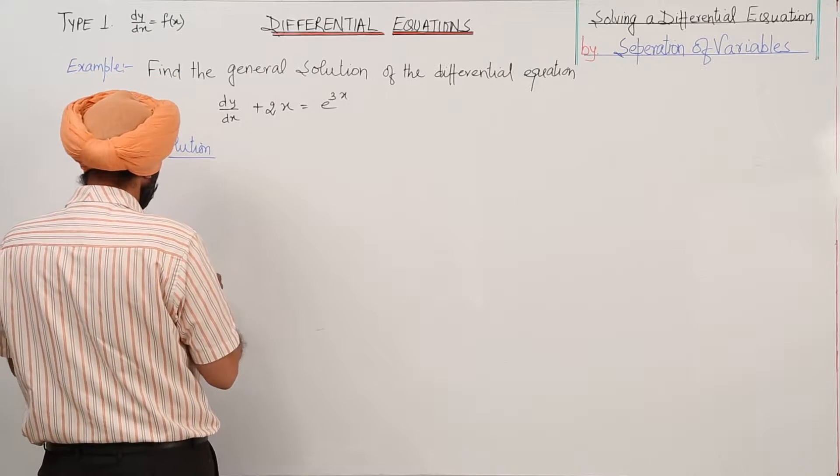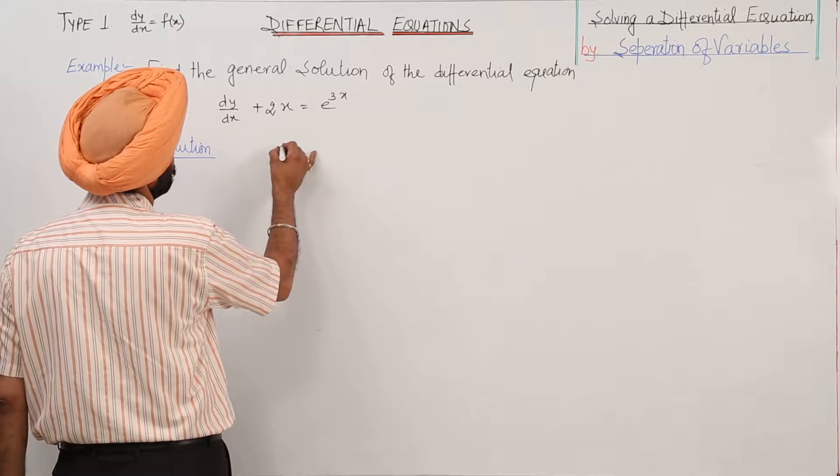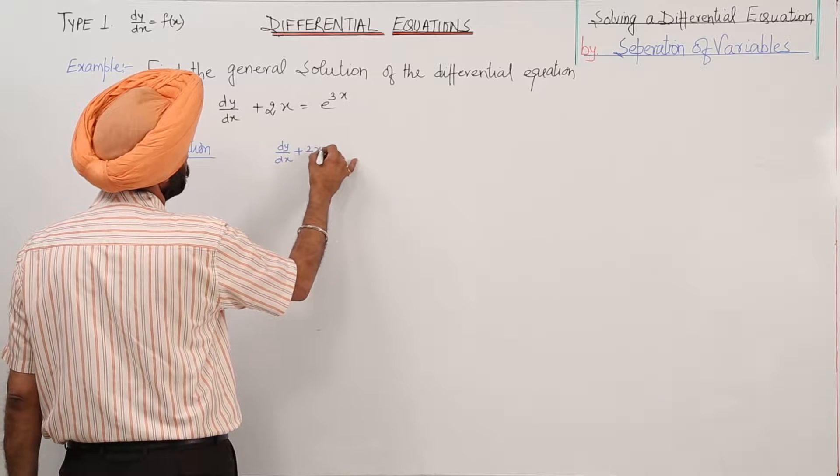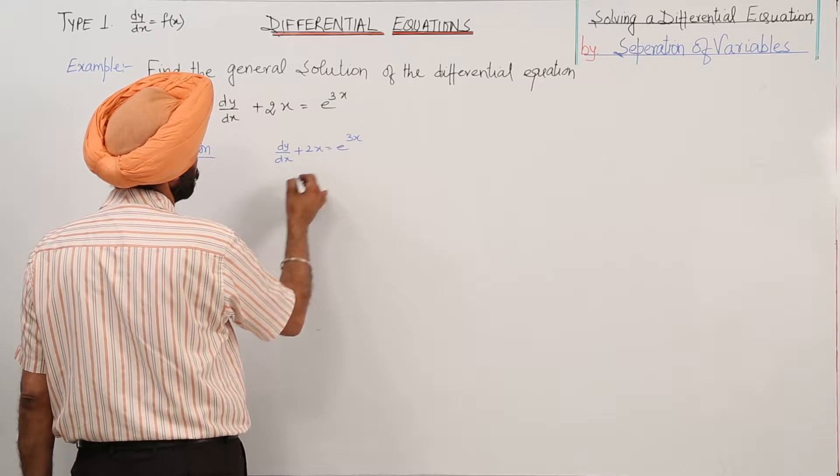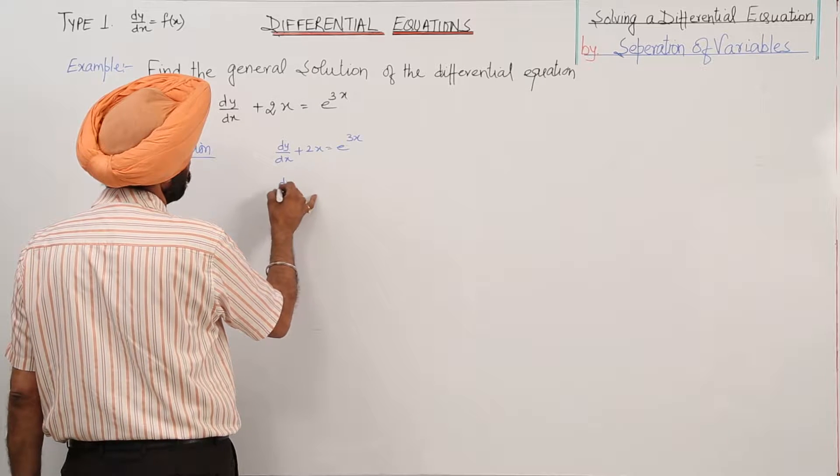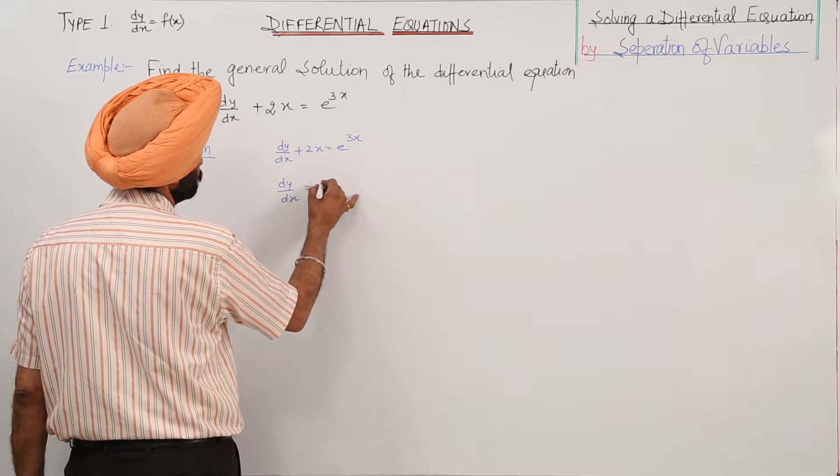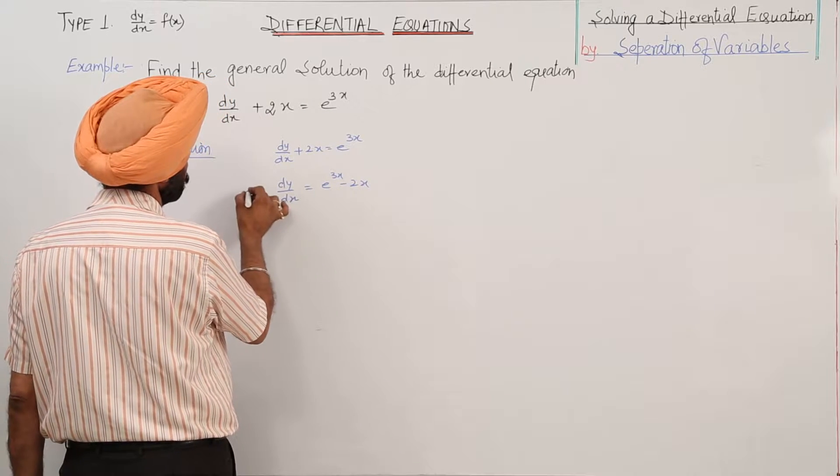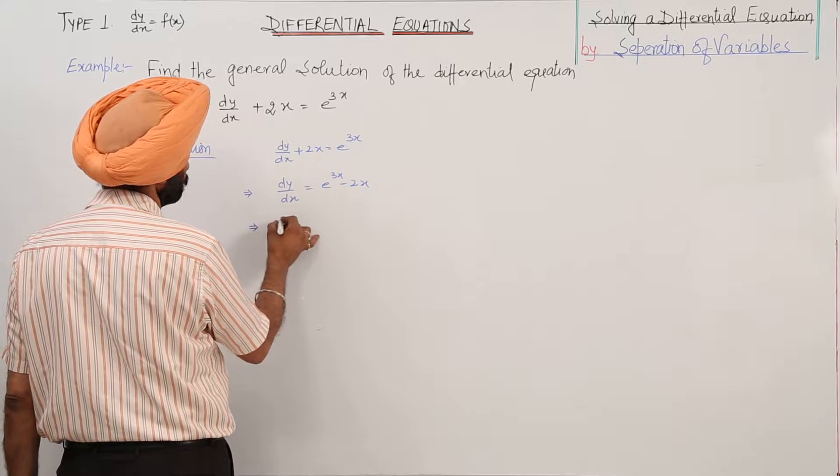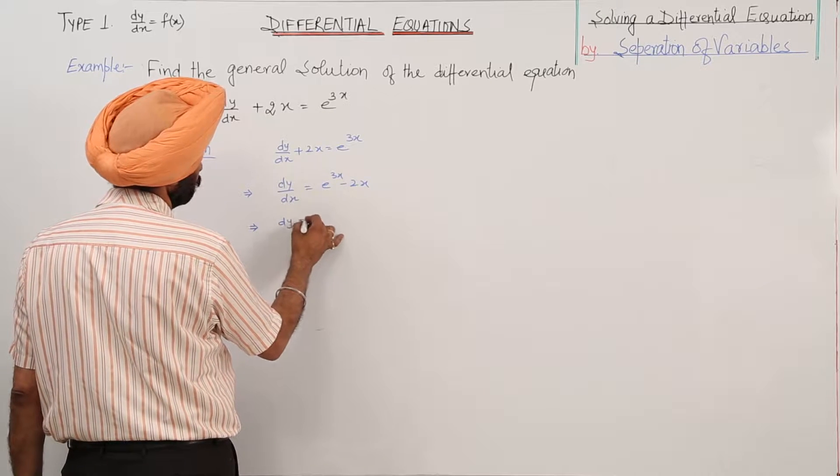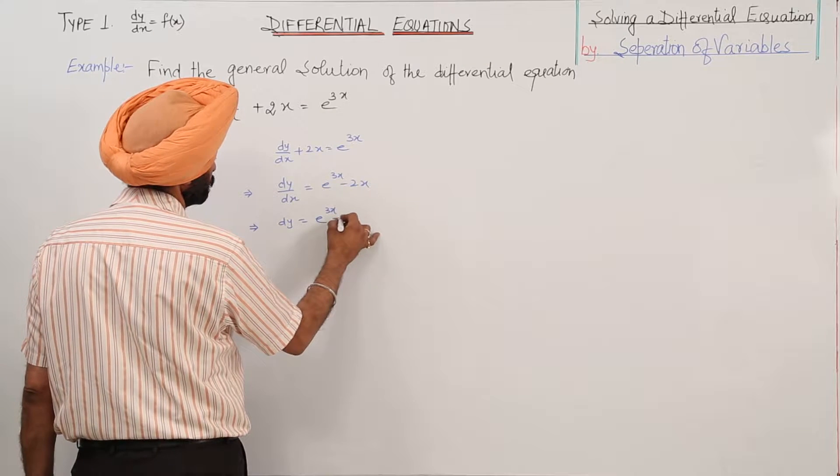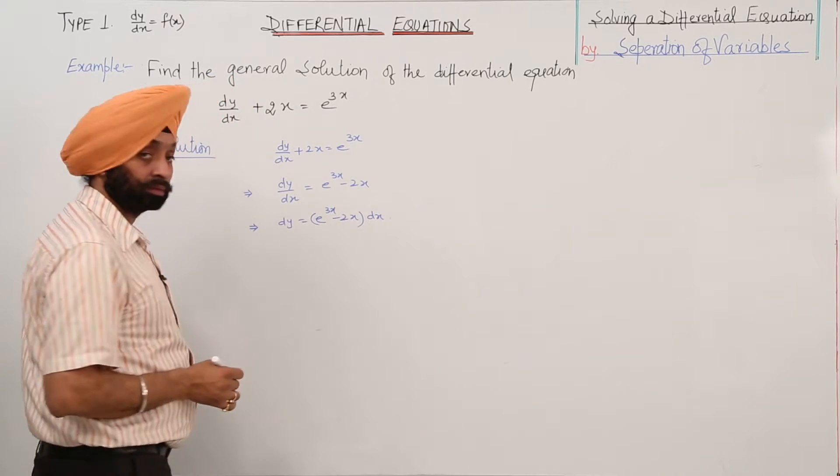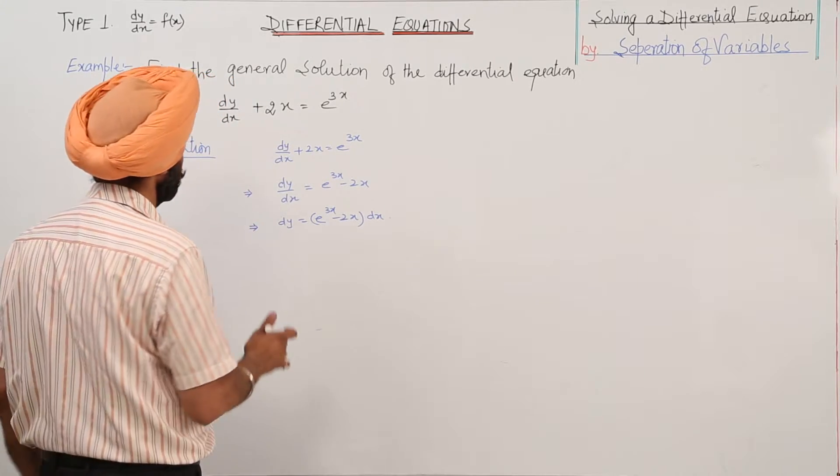Now, we can write it as dy by dx plus 2x is equal to e raise to power 3x. dy by dx is equal to e raise to power 3x minus 2x. Now, dy is equal to e raise to power 3x minus 2x with dx. Now, variables are separated.